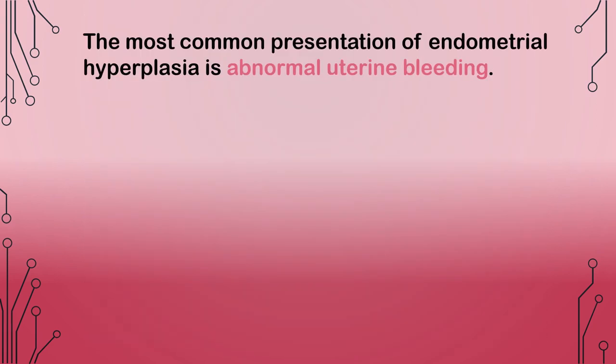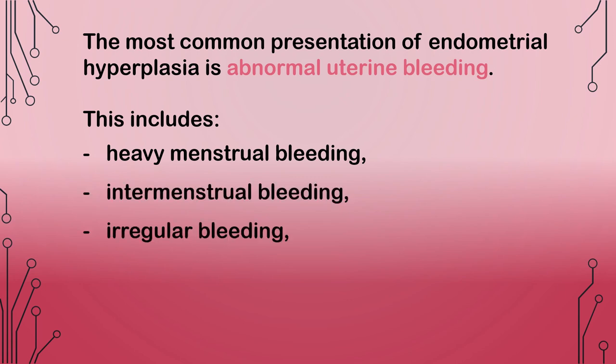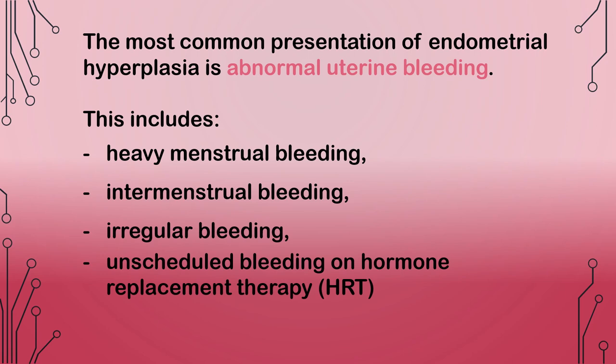The most common presentation of endometrial hyperplasia is abnormal uterine bleeding. This includes heavy menstrual bleeding, intermenstrual bleeding, irregular bleeding, unscheduled bleeding on hormone replacement therapy or HRT, and postmenopausal bleeding.